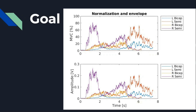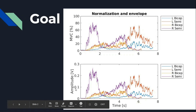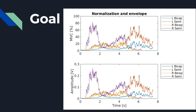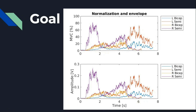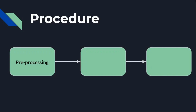The y-axis is MVC, which is maximum voluntary contraction, in percentage. The plot below is the envelope — the data is already pre-processed and the envelope is plotted, so the y-axis is amplitude because this is not normalized. If you look closely, the right bicep femoris is a little bit closer to right semitendinosus in the normalized data compared to just the envelope. Normalization allows you to compare one muscle with another muscle, or one trial with another trial.